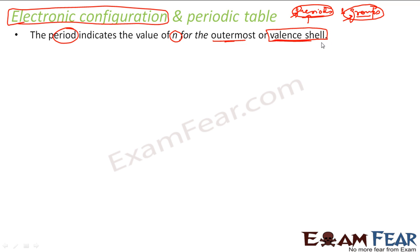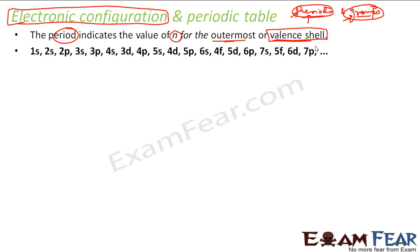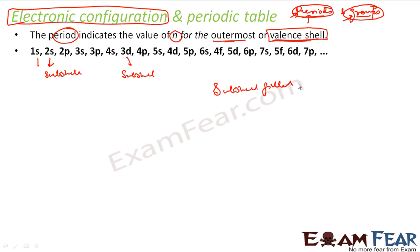Period one means the valence shell is number one; period two means the valence shell is number two. Now, this is the order in which orbitals are filled — these are all subshells: 2s, 3d, and so on. This is the Aufbau principle, which we covered in the previous chapter on atomic structure, explaining how subshells are filled.